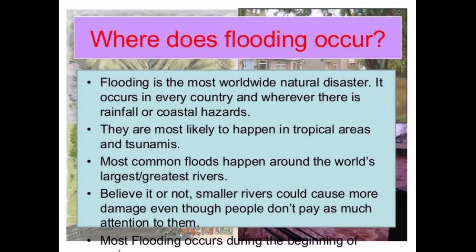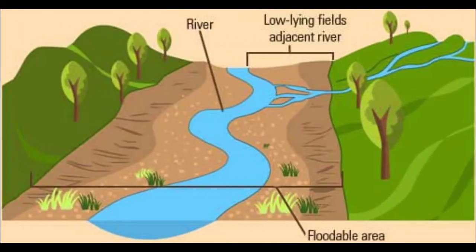Why does this happen? During winter, rivers and lakes can accumulate excess water. When there is heavy rainfall, there is more water in the river, and the river cannot drain it out. The water level rises and eventually overflows. The water fills up and begins to flow out from the river surface, causing overflow.